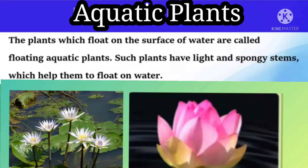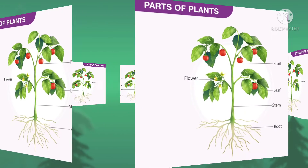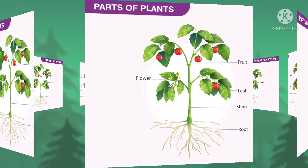Aquatic plants. Dear children, plants which float on the surface of water are called floating or aquatic plants. Such plants have light and spongy stems which help them to float on water. In our previous session we have learnt parts of plants. These plants have very light and spongy stems that help them to float on water.